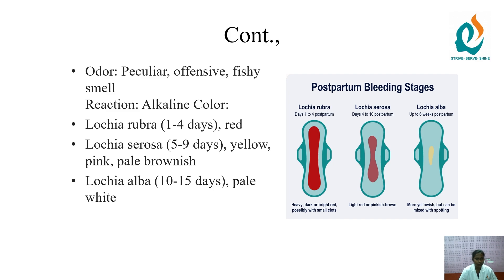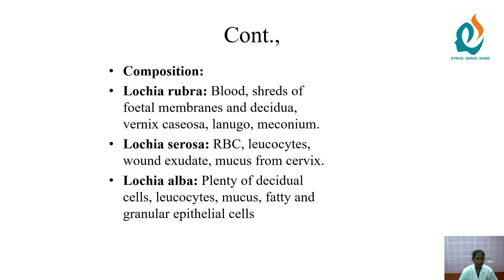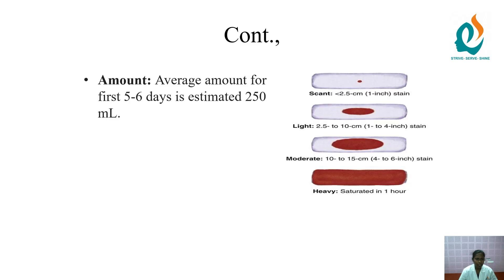There are three types of lochia discharge: Lochia rubra occurs from days 1–4 and is red in color. Lochia serosa occurs from days 5–9 and appears yellow-pink or pale brownish. Lochia alba occurs from days 10–15 and is pale white. Lochia rubra contains blood, shreds of fetal membranes, decidua, vernix caseosa, lanugo, and meconium. Lochia serosa contains RBCs, leukocytes, wound exudate, and cervical mucus. Lochia alba contains decidual cells, leukocytes, mucus, fatty and granular epithelial cells. The average amount for the first 5–6 days is estimated at 250 ml.